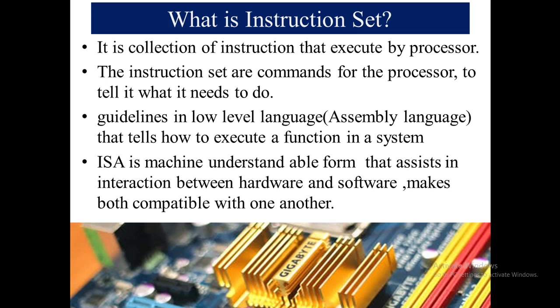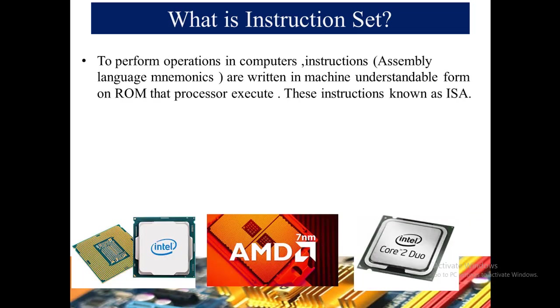ISA makes both hardware and software compatible with one another. Software is written in high-level language, and to convert high-level language into low-level language we need a helper — ISA is that helper. It converts instructions into the low-level language that the computer can easily understand. Instructions written as assembly language mnemonics are stored in machine-understandable form on ROM for the processor to execute — these are known as Instruction Set Architecture.